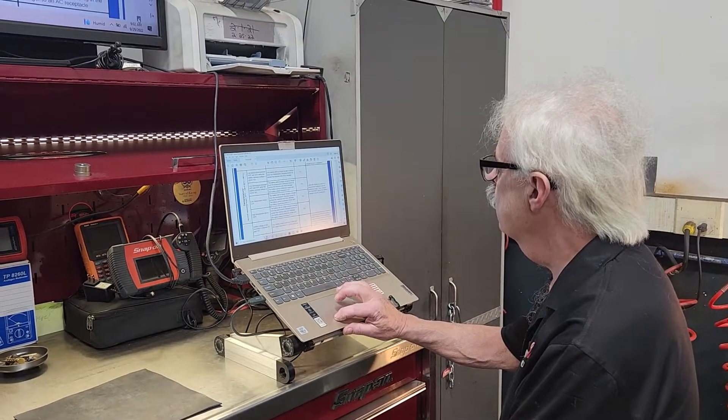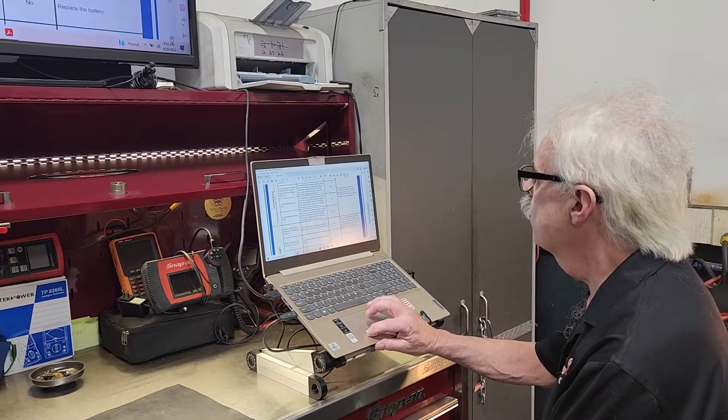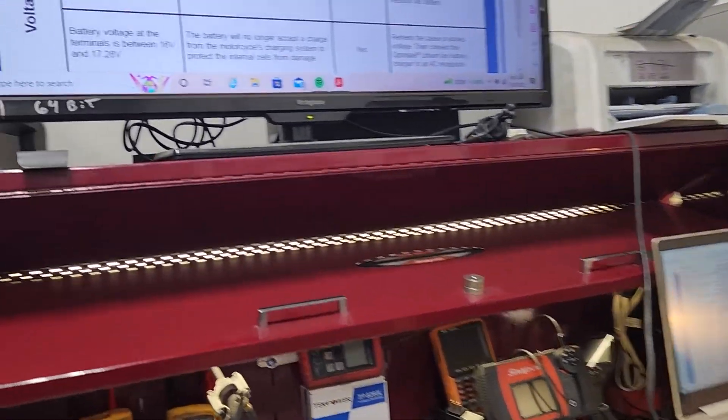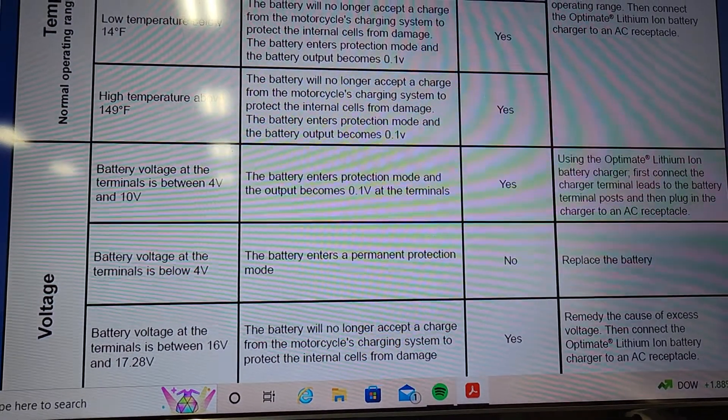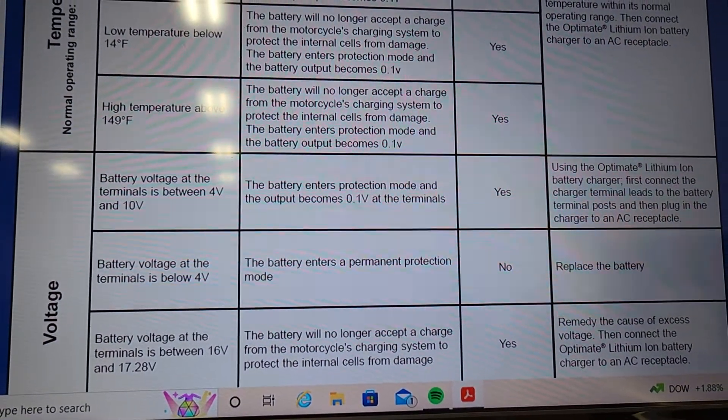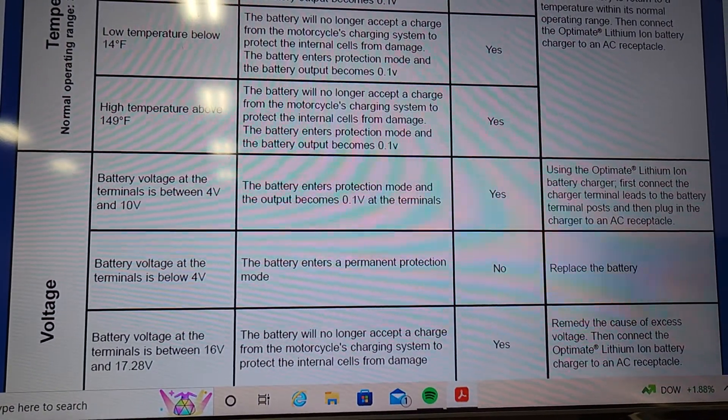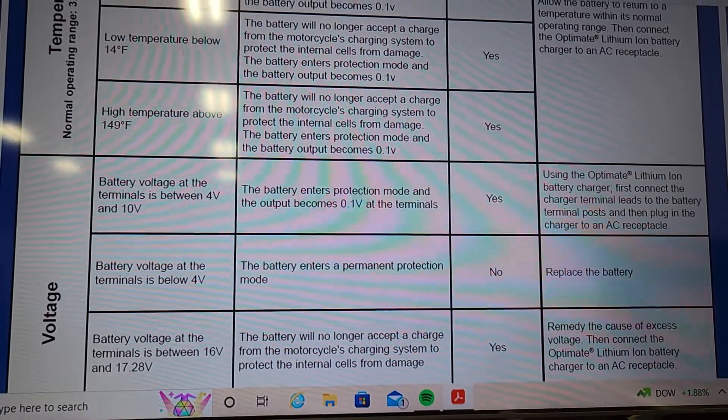There's a couple interesting ones here. Now if the battery voltage at the terminals is below 4 volts, the battery enters a permanent protection mode. You cannot recover it. Replace the battery.